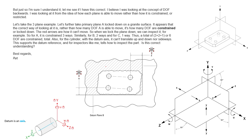The red arrows show how it can and can't move. In our primary datum reference lesson in the fundamentals course — by the way, there are two lessons you should look into: our datum reference frame lesson and our primary datum controls lesson — the red arrows show how it can't move. So when we lock the plane down, we can inspect it. For A, it is constrained in three ways; similarly for B it's two, and for C it's one. This is the 3-2-1 rule we talk about in our datum reference example.